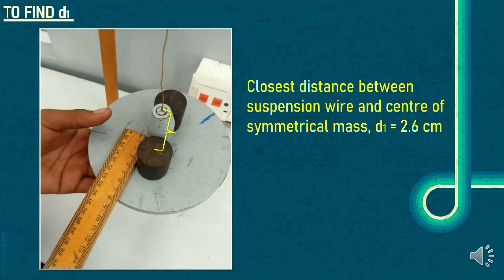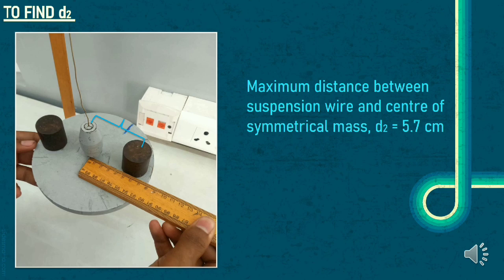Closest distance between the suspension of wire and the center of symmetrical mass is measured when the identical masses are placed closer to the disc chuck. Maximum distance between the suspension of wire and the center of symmetrical mass is measured when the identical masses are placed far from the disc chuck.